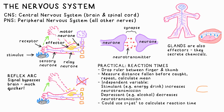You can investigate reaction times by holding the bottom of a ruler between a person's finger and thumb and dropping it without warning. Then you can measure the distance it falls before they catch it. Do this multiple times and take the mean average — not too many times though, as their nervous systems will start to get a bit better at reacting to this.